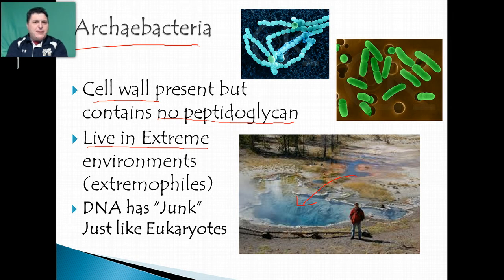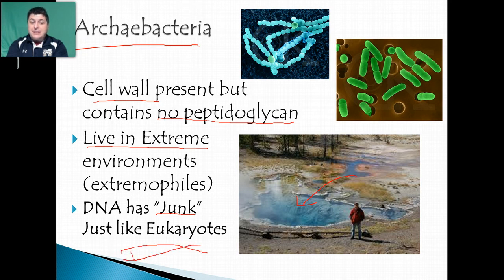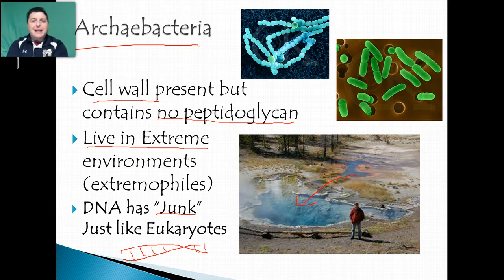The last interesting piece about archaebacteria is that they have junk DNA, just like eukaryotes. Inside archaebacterial DNA we've got coding regions that give us our traits, but we also have non-coding regions — junk — that gets edited out after transcription in the post-transcriptional process. It's striking that these single-celled organisms with no nucleus also contain this junk DNA, which indicates that perhaps archaebacteria and eukaryotes share a more similar common ancestor.